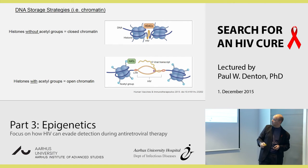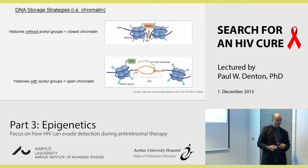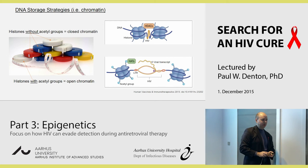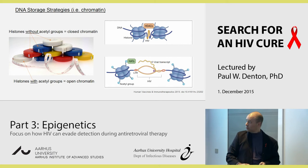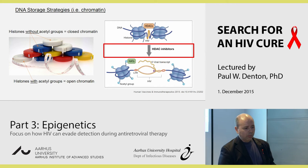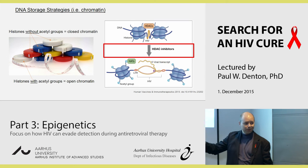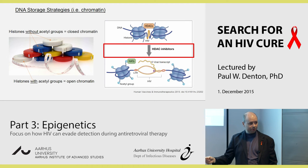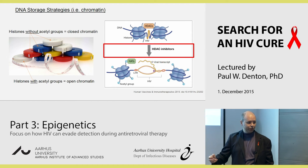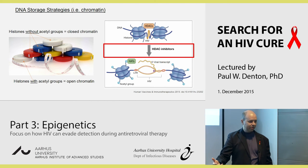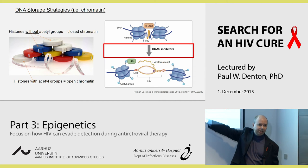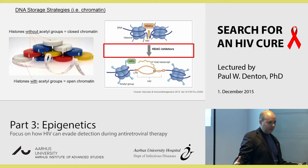To restate: histones without acetyl groups are closed, with acetyl groups they are open — illustrated by the open or closed tape measures. Now this gets a little counterintuitive, but if you take the double-negative name 'histone deacetylase inhibitors' — if you inhibit deacetylation, you're actually increasing acetylation. So histone deacetylase inhibitors increase acetylation, which leads to the opening of chromatin.